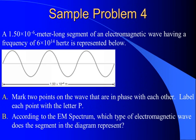A 1.5 times 10 to the minus 6 meter long segment of an electromagnetic wave, having a frequency of 6 times 10 to the 14 hertz, is represented below. Mark two points on the wave that are in phase with each other. Well, if you remember, points that are in phase are the same point on subsequent waves. So an easy one, why don't we pick a point over here, and maybe a point over here on the next wave. Those two points, we will label with a P, and they are in phase with each other.